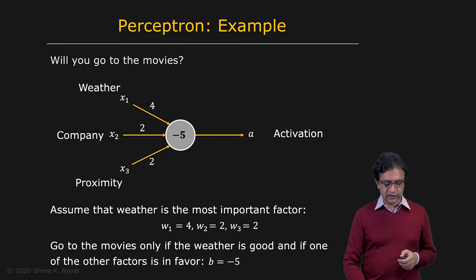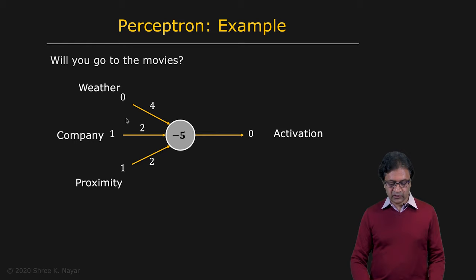Let's see how that works. Let's say that the weather is bad. If the weather is bad, you have one times two plus one times two. That's four. Four minus five is minus one, which is less than zero. And therefore, the output is zero, and you will not go to the movies. Now, if the weather is good and let's say you happen to have company, then you have one times four. That's four plus one times two. That's two. That's equal to six. Six minus five, the bias right here, is one. That's greater than zero. And therefore, the output is one. So in this case, the decision is to go to the movies.